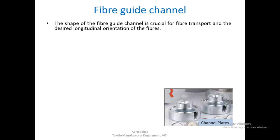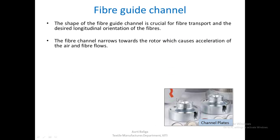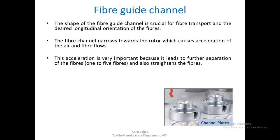The shape of the fiber guide channel is very crucial for fiber transport and also for the longitudinal orientation of the fibers, which is very much desirable in rotor spinning. The fiber channel narrows towards the rotor, and this narrowing causes the acceleration of the air and the fiber flowing towards the rotor. The acceleration is very important as it helps in the separation and straightening of fibers.